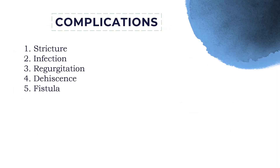For the complications, first is stricture, which is an abnormal narrowing of a bodily passage — the operated intestine may narrow. Next is infection. Regurgitation may also occur. Dehiscence can happen if the wound is not properly closed. And finally, fistula, which is an abnormal opening or passage between two organs or between an organ and the surface of the body.